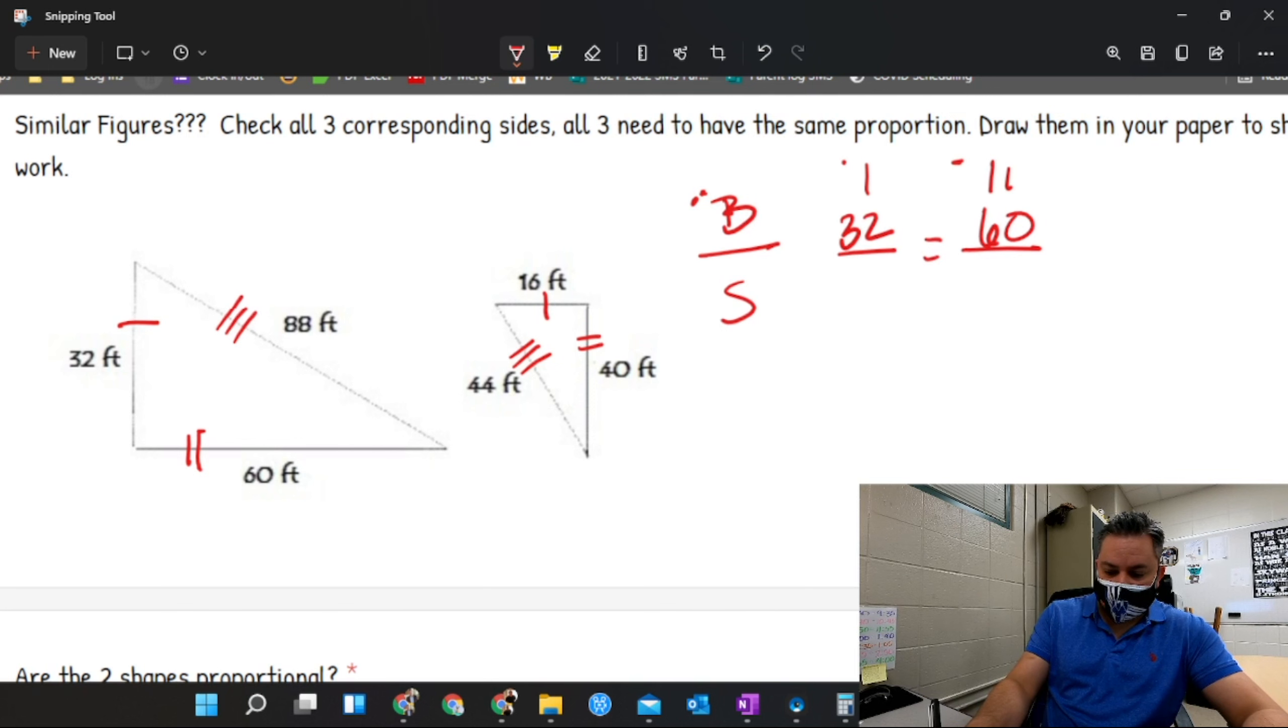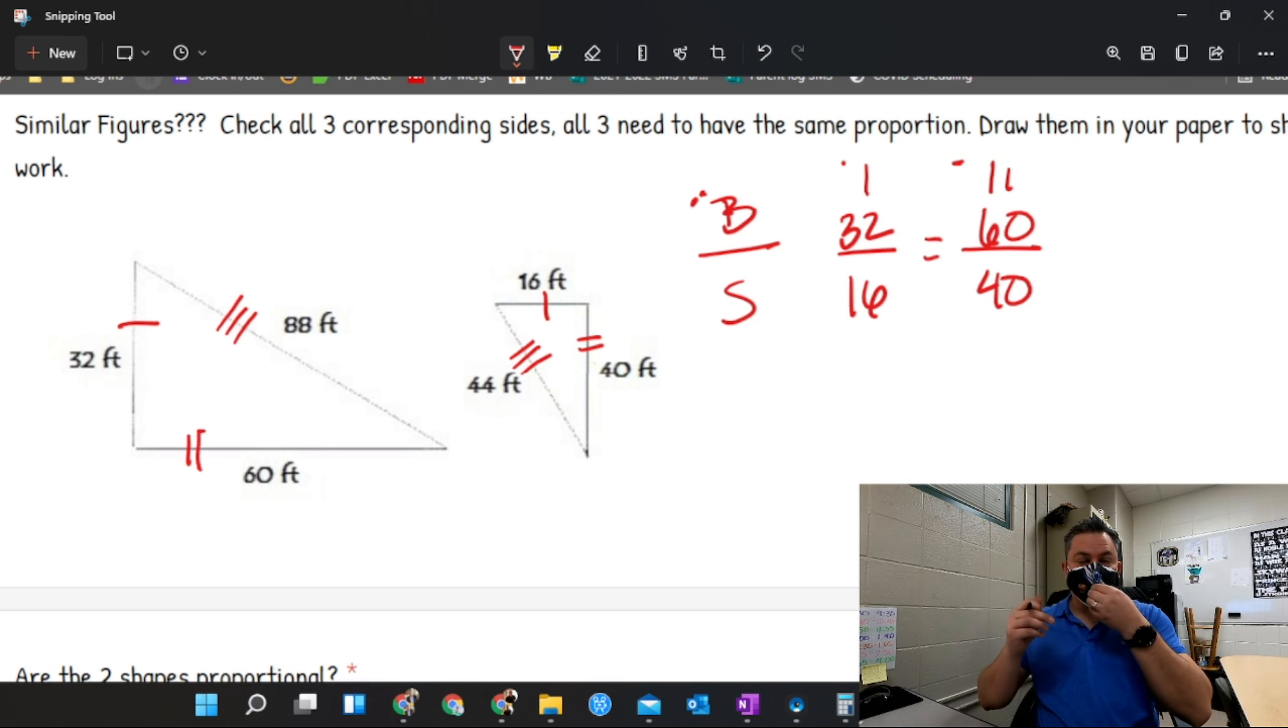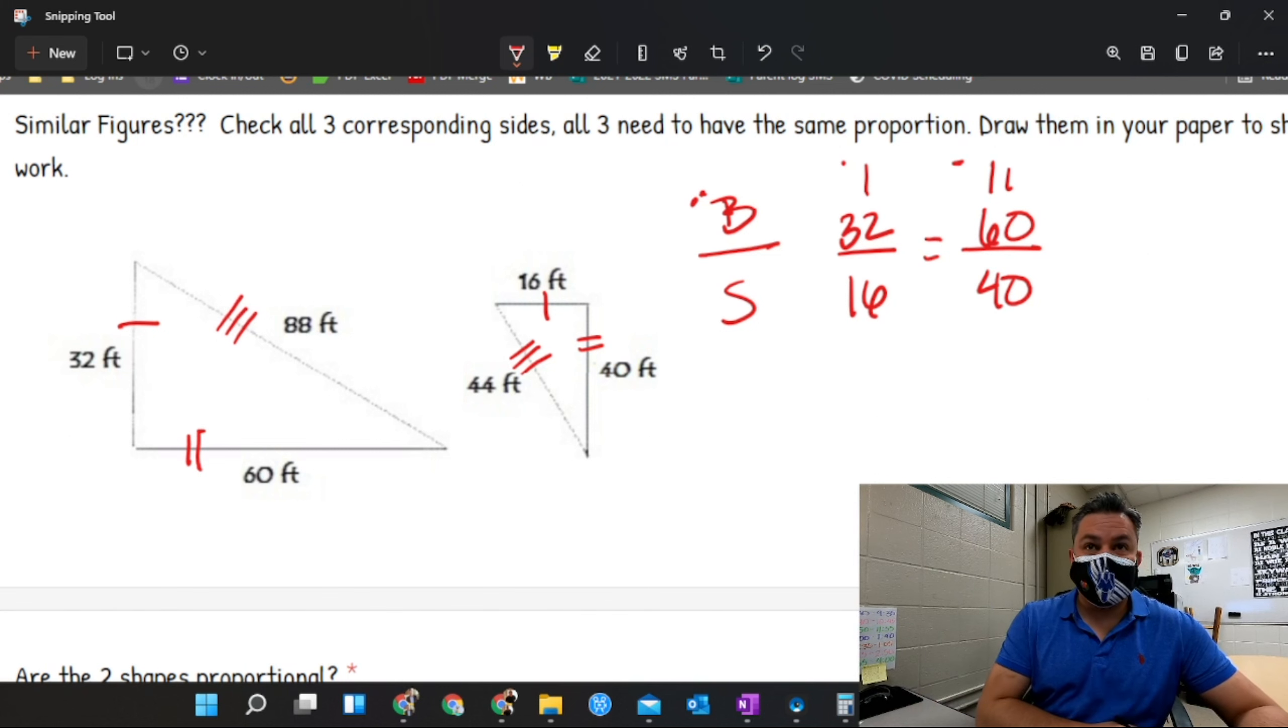Now since I label this, what is my S1? 16. Very good. And my S2? 40. Now I can do a few different things right here to see if they are proportional. I can check the first fraction and see if I can notice a pattern. Is anything happened between 16 and 32?